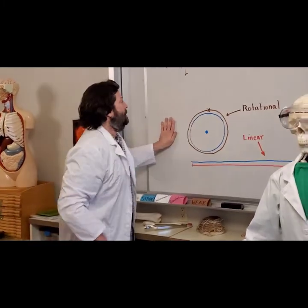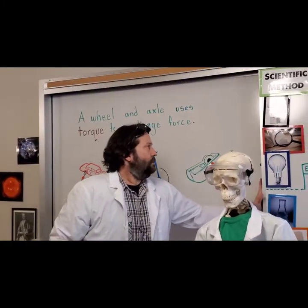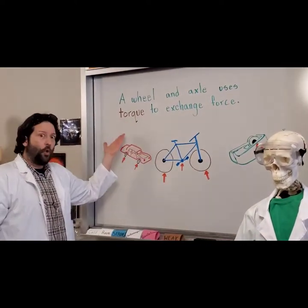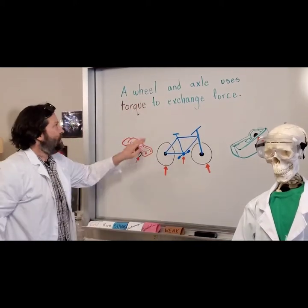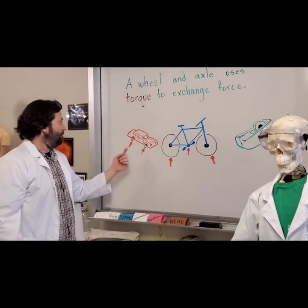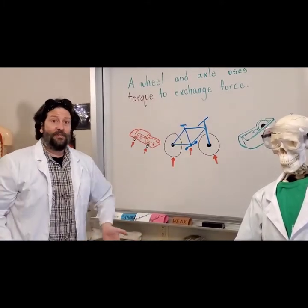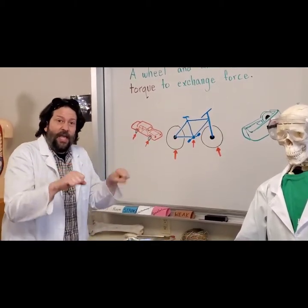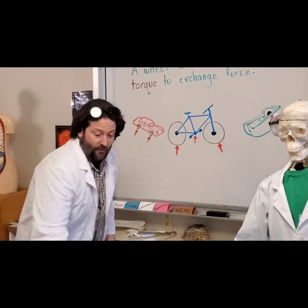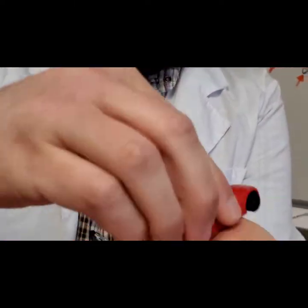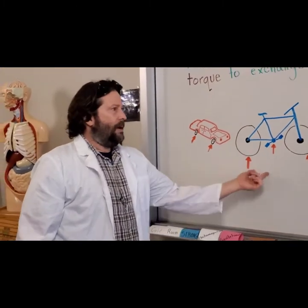A wheel and axle uses torque — that little move to a big move — to exchange force between a small and a large wheel. Things we use all the time: our cars, how we get to school and around town. They have an engine that spins a little tiny crank, which fires off the wheels and transfers energy from the engine straight into the wheels, and then it goes.